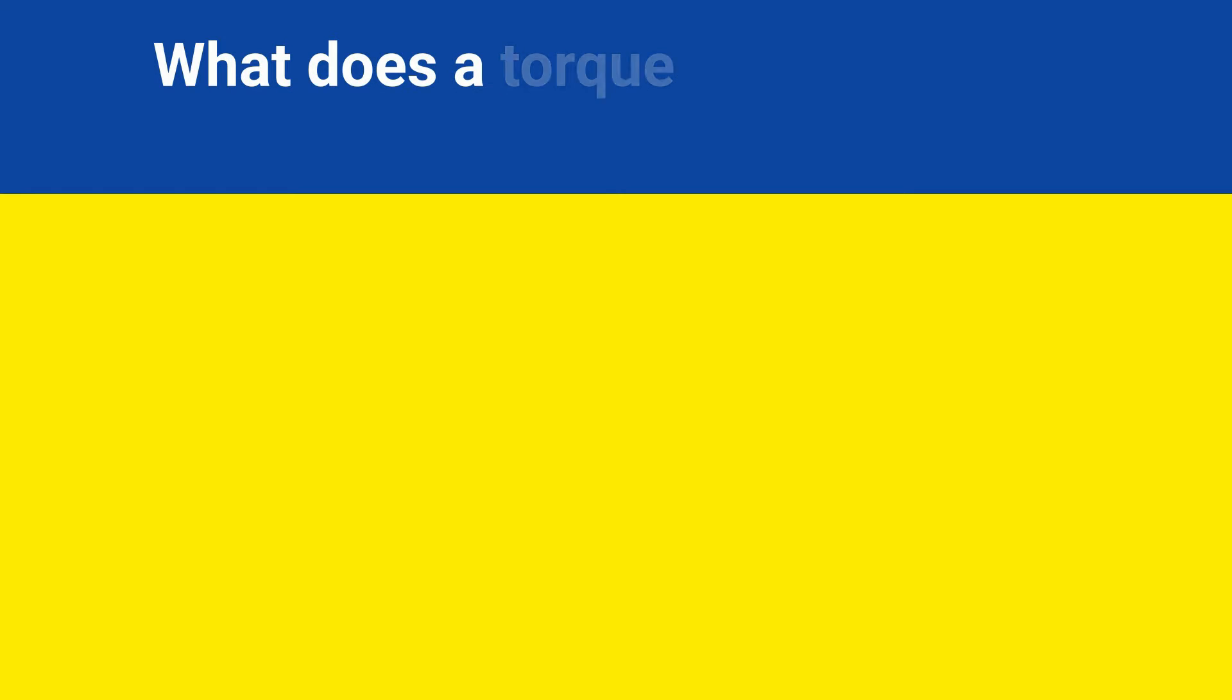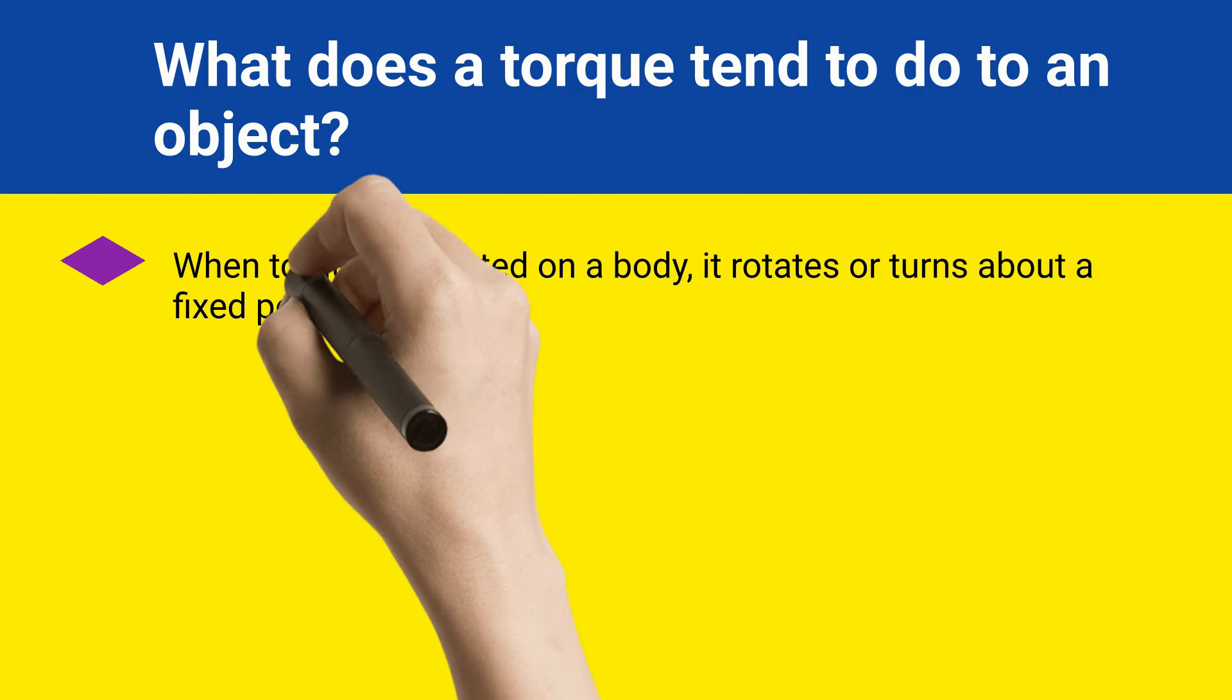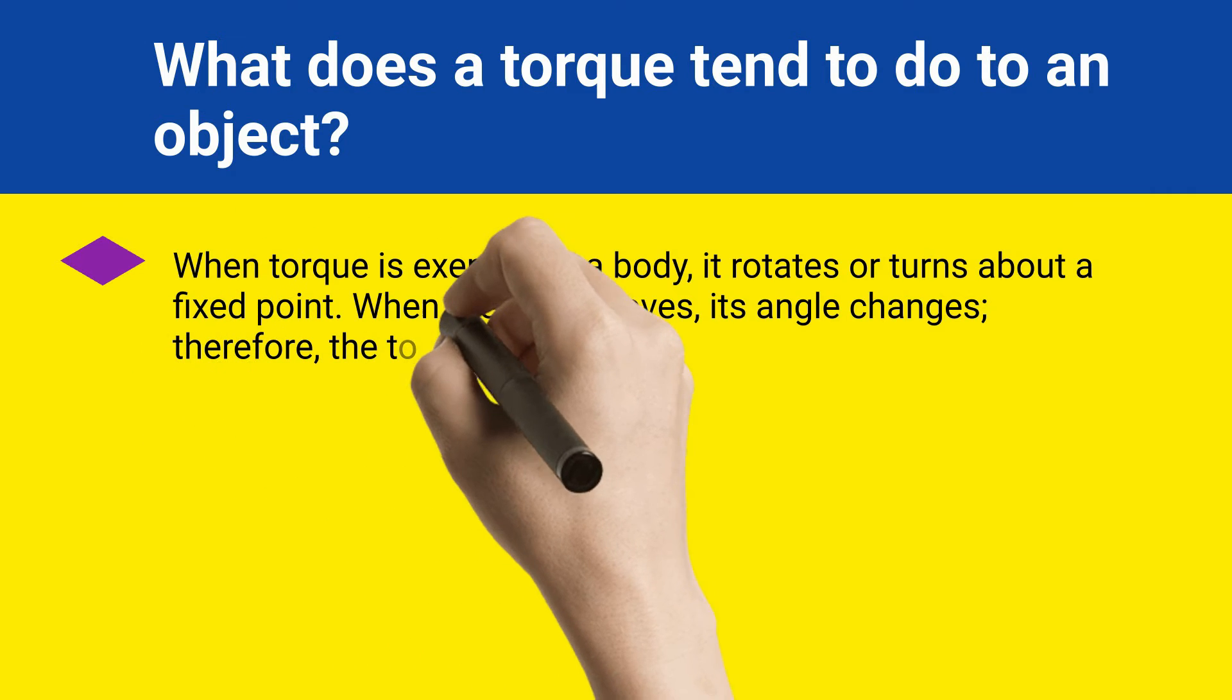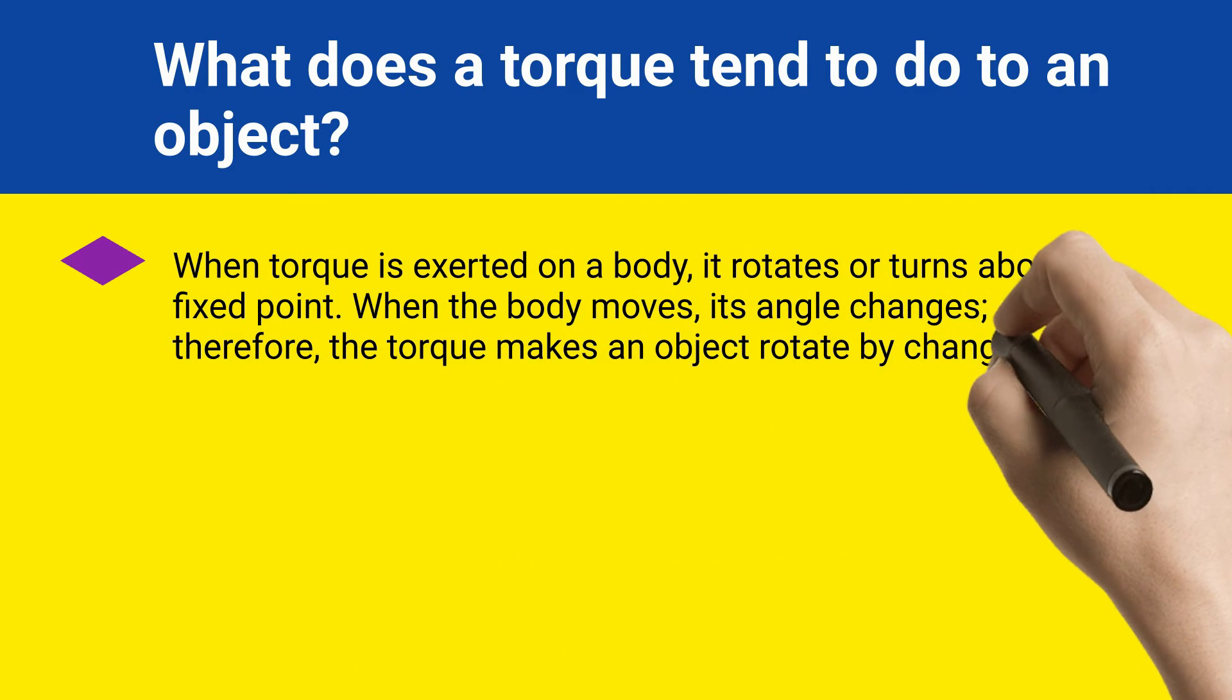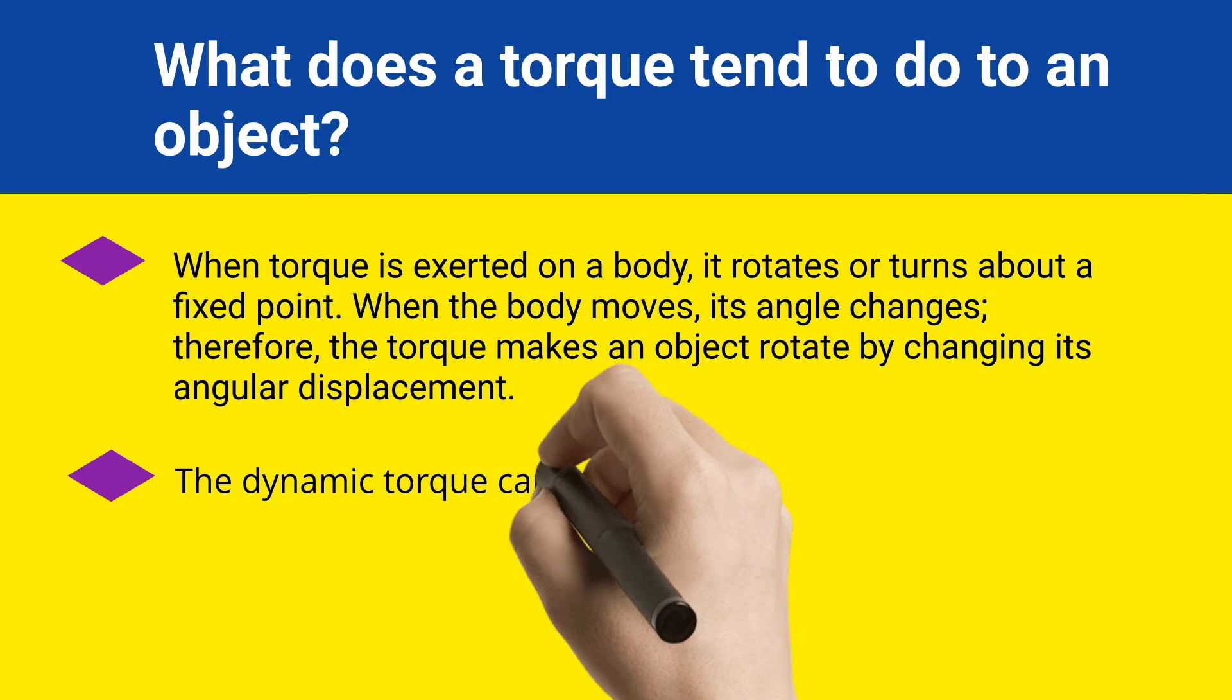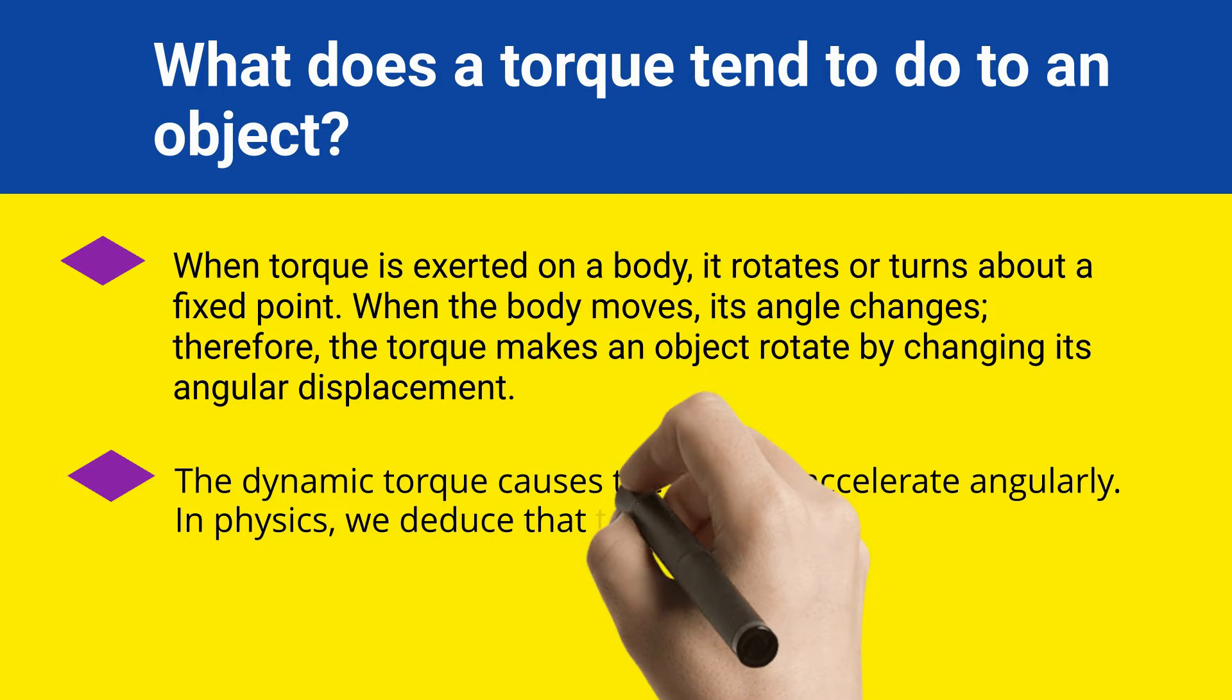What does a torque tend to do to an object? When torque is exerted on a body, it rotates or turns about a fixed point. When the body moves, its angle changes. Therefore, the torque makes an object rotate by changing its angular displacement. The dynamic torque causes the body to accelerate angularly.